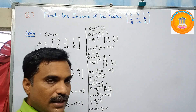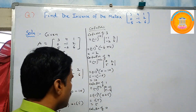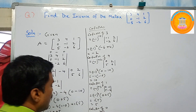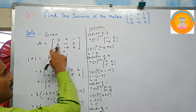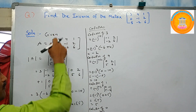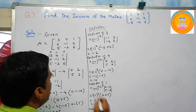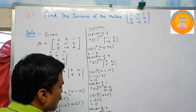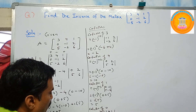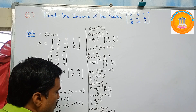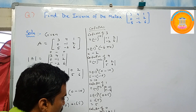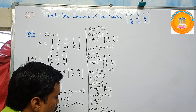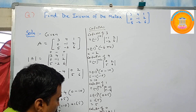Cofactor of zero: zero is in the second row and first column, so i equals two, j equals one. Minus one to the power two plus one equals three. The minor is the determinant of four, one, minus two, six, which equals four times six minus minus two times one equals twenty-four plus two equals twenty-six. Since power three is odd, minus one times twenty-six gives cofactor of zero equals minus twenty-six.